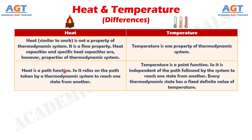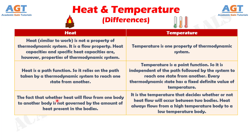Difference No. 11: Heat is a path function, so it relies on the path taken by a thermodynamic system to reach one state from another, whereas temperature is a point function, so it is independent of the path followed by the system. Every thermodynamic state has a fixed, definite value of temperature. Difference No. 12: Whether heat will flow from one body to another is not governed by the amount of heat present in the bodies, whereas it is the temperature that decides whether or not heat flow will occur between two bodies. Heat always flows from a high temperature body to a low temperature body.